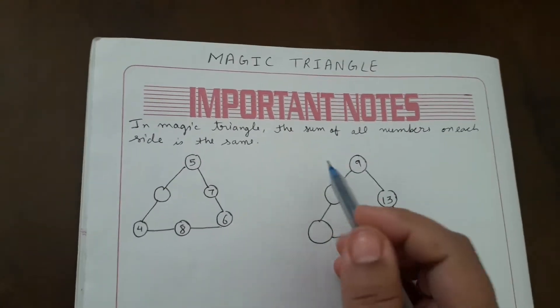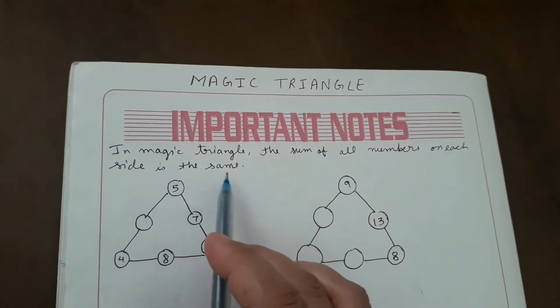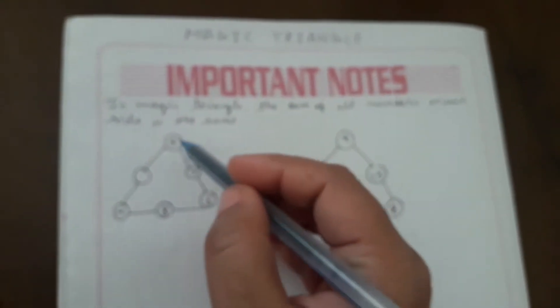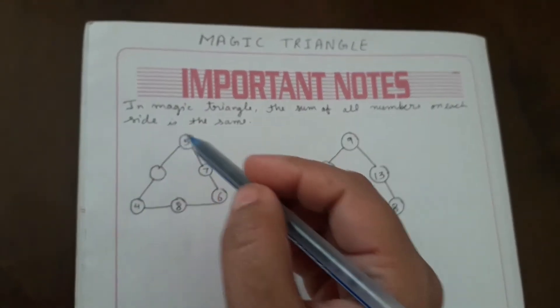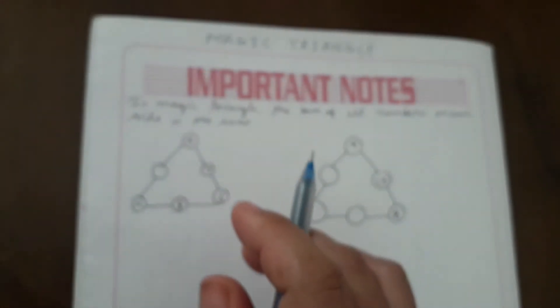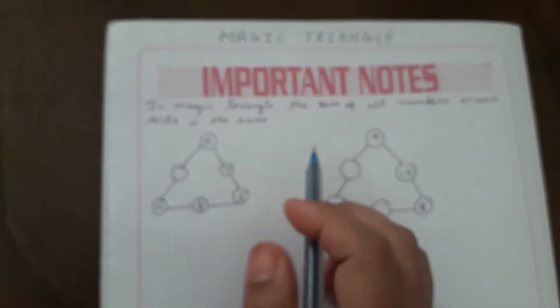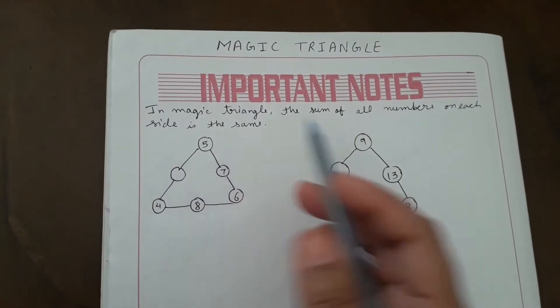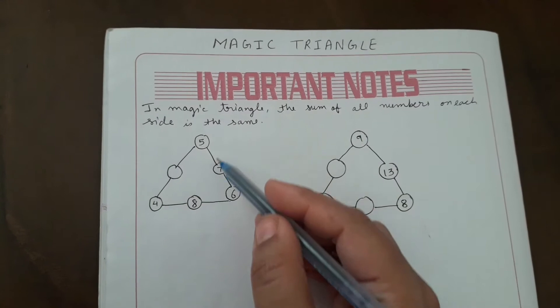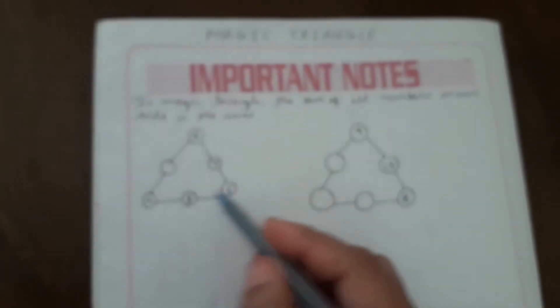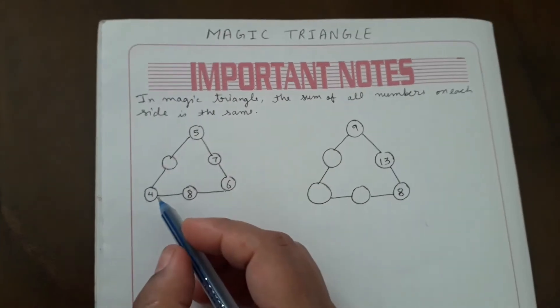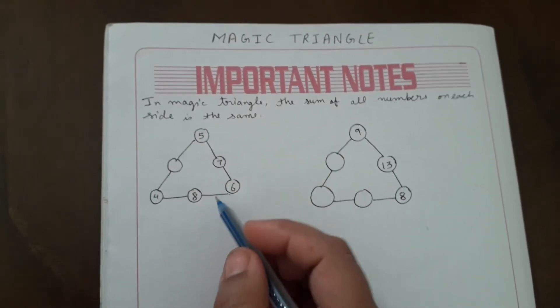First of all, what are the important notes in magic triangle? The sum of all numbers on each side is the same. This is the triangle - this side, this side, and this side. Whatever the sum will come must be same on all sides. The sum of all numbers on each side must be same.